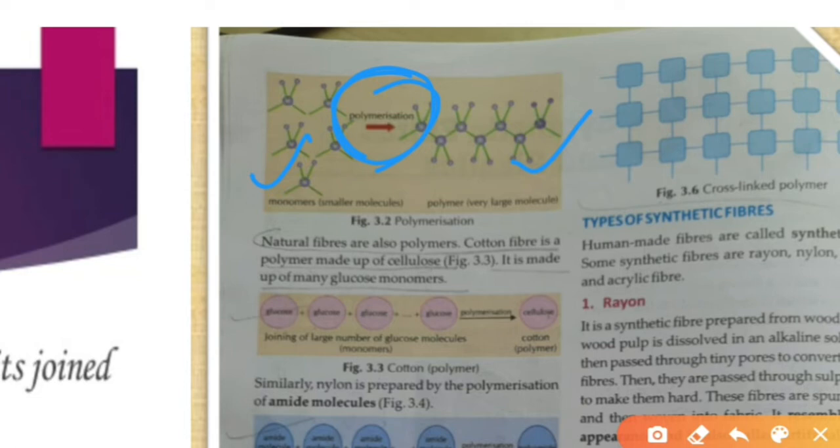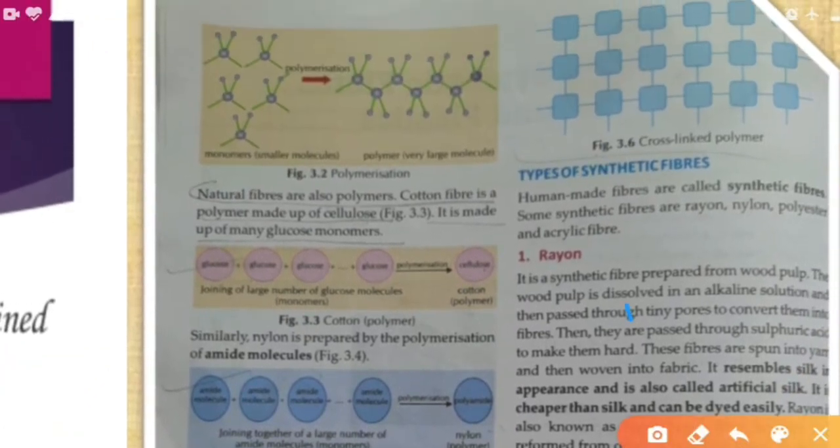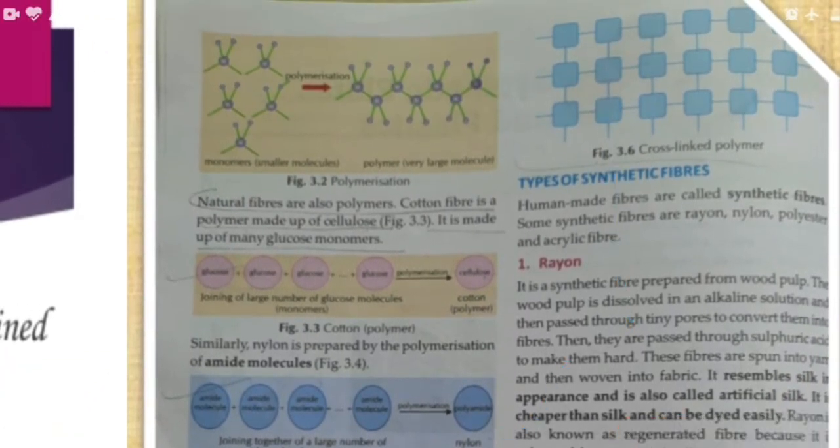Here are some very important questions likely asked in your unit test. Glucose + glucose + glucose joined together form cellulose, which comes from cotton — this is a natural polymer. For synthetic fibers: amide + amide + amide going through polymerization makes polyamide, which is nylon. So nylon is a polyamide.